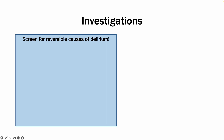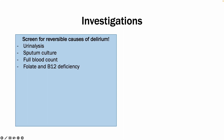Things you want to look out for in investigations: urinalysis to see whether there is infection or hyperglycemia; sputum culture to see whether there is a chest infection; a full blood count to identify infection or anemia; folate and B12 deficiency, as these can also precipitate delirium; urea and electrolytes to see whether there is an acute kidney injury or things such as hyponatremia or hypokalemia; and HbA1c to identify patients in hypoglycemia. You should also test calcium to see whether the patient is hyper or hypocalcemic.